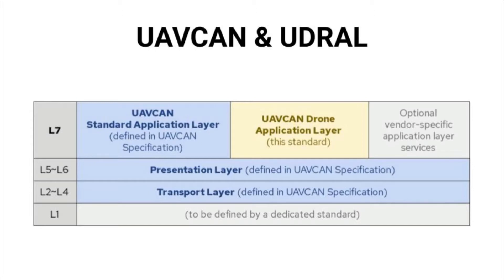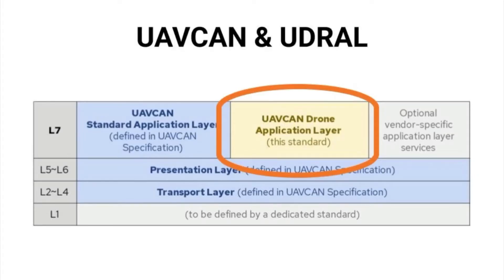The next generation, UAVCAN V1, becomes more universal and easier to apply since it is not tied to a specific application and covers only levels 2 through 6. The application layer 7 is delegated to a separate standard named UDRAAL, short for UAVCAN Drone Application Layer, which defines the application layer for use in avionic systems of manned and unmanned air vehicles. We anticipate the appearance of similar standards for other fields, such as spacecraft, in the near future.